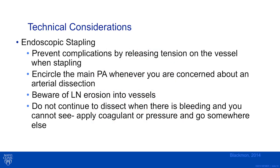Technical considerations when performing endoscopic stapling include preventing complications by releasing tension on the vessel when stapling, encircling the main pulmonary artery whenever you are concerned about an arterial dissection that may be risky, and beware of lymph node erosion into the vessels. Do not continue to dissect when there is bleeding and you cannot see. Apply a coagulant or pressure and go somewhere else to work for a while, then come back.